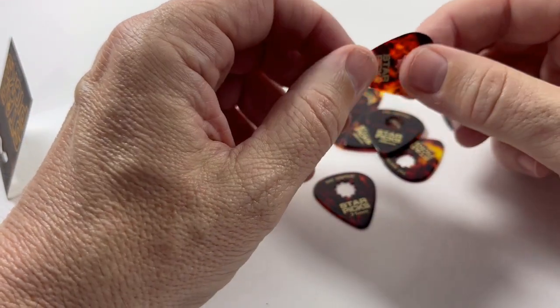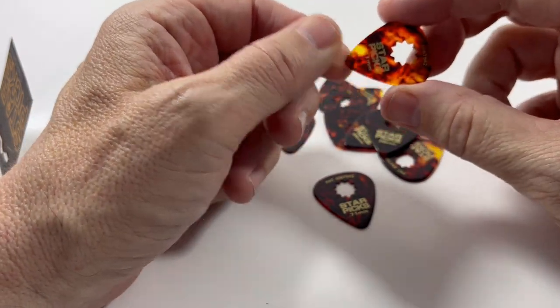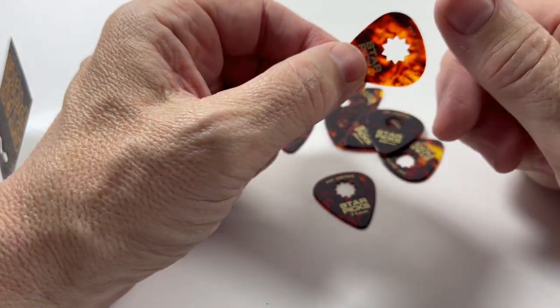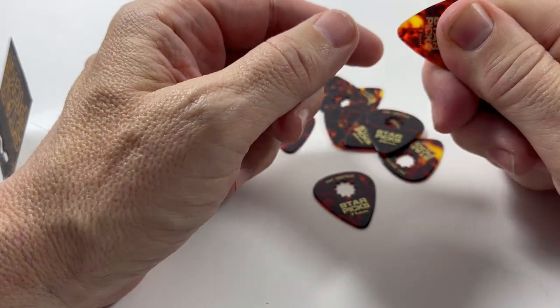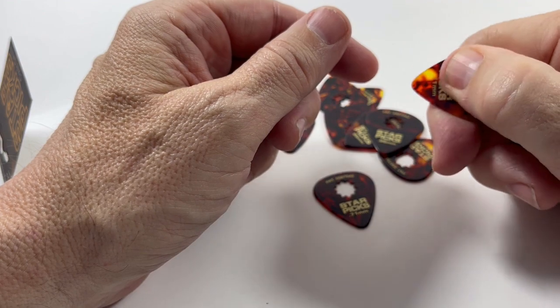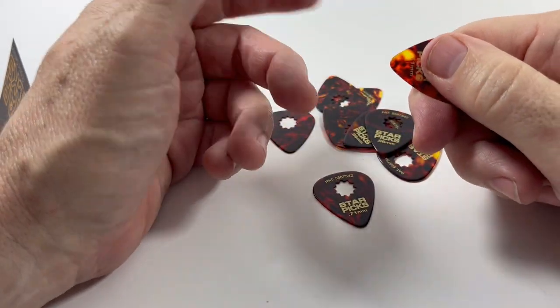Unique about Star picks is that they're a standard 351 pick and they have this patented star punch in them. It gives you extra grip on the pick, which is nice for celluloid since it tends to be a little slick.